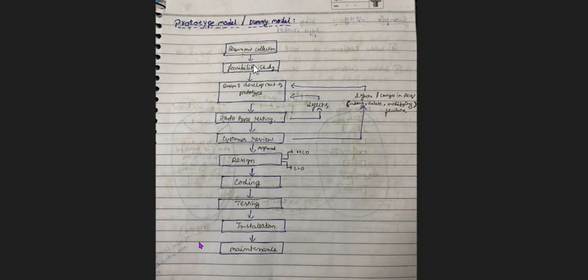The prototype model is similar to waterfall but adds three new steps. After feasibility study, the team designs and develops a prototype — a dummy model. For example, like an architect providing a dummy model of a house showing layout, kitchen location, and bedroom size, a software company creates a dummy model to show the customer how the software will look after implementation.